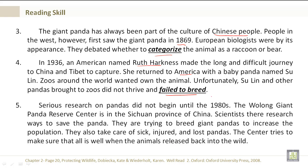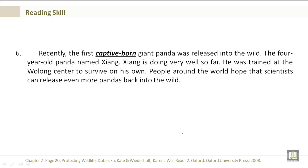Serious research on pandas did not begin until the 1980s. The Wulong Giant Panda Reserve Center is in the Sichuan province of China. Scientists there researched ways to save the panda. They are trying to breed giant pandas to increase the population. They also take care of sick, injured, and lost pandas. The center tries to make sure that all is well when the animals are released back into the wild. Recently, the first captive-born giant panda was released into the wild. The four-year-old panda named Zhang Zhang is doing very well so far. He was trained at the Wulong Center to survive on his own. People around the world hope that scientists can release even more pandas back into the wild.